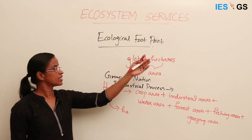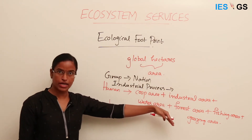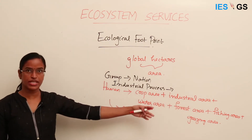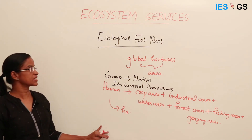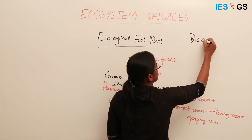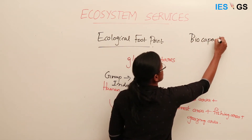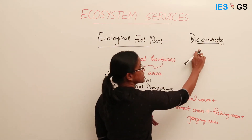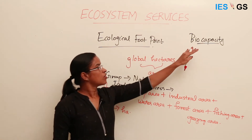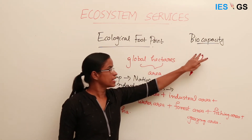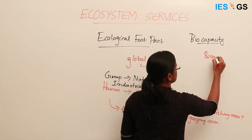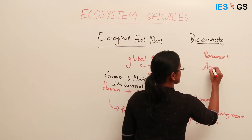This includes waste assimilation also. Here we have accounted for the forest area needed to absorb carbon dioxide emissions. Associated with it is a term called biocapacity. This shows the utilization on one side and the capacity of nature to provide these services on the other — how much the earth has capacity to give its resources plus assimilate the waste generated.